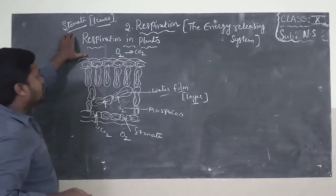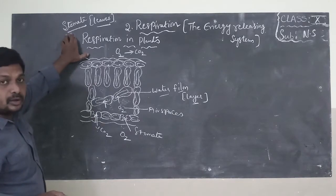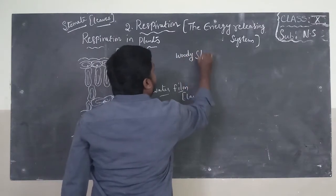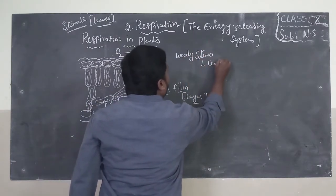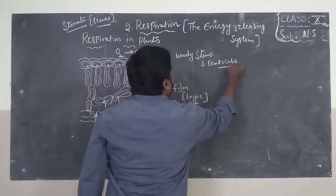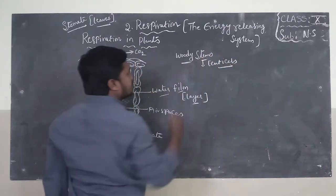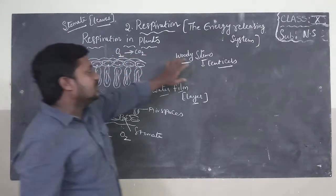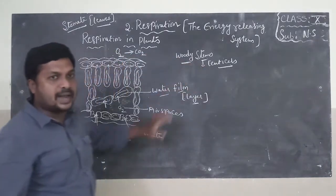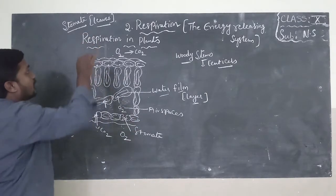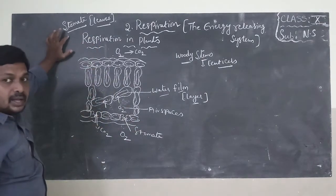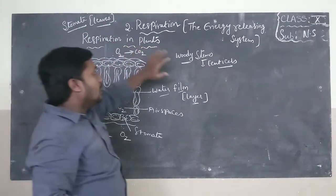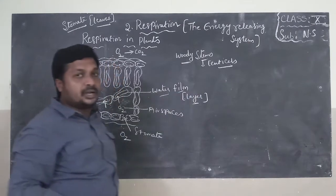Stomata are the respiratory organs present in the leaves. And for woody stems — hard stems — they have special openings called lenticels. Lenticels are the respiratory organs in the stems. So: stomata are the respiratory organs in leaves, and lenticels are the respiratory organs in woody stems.